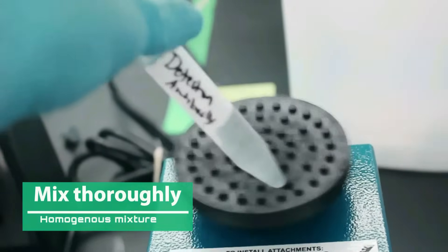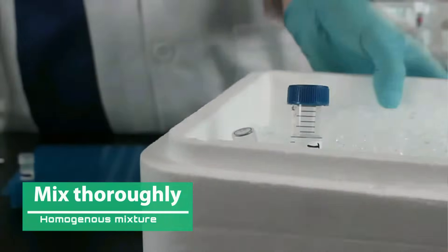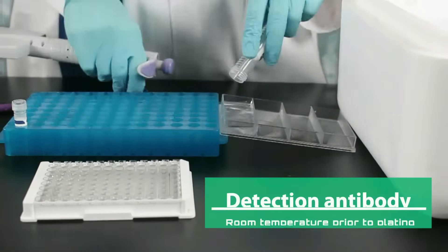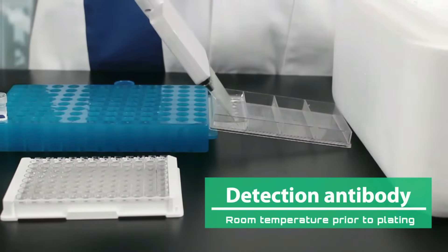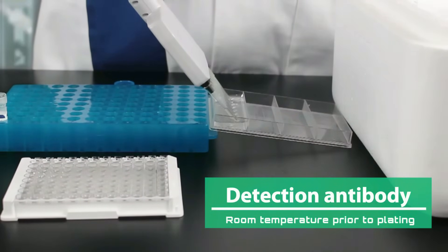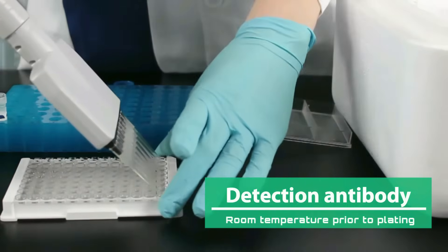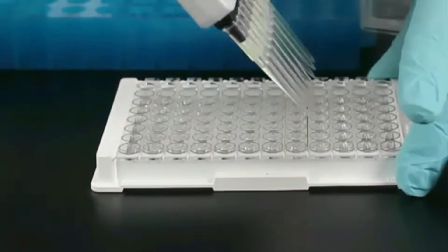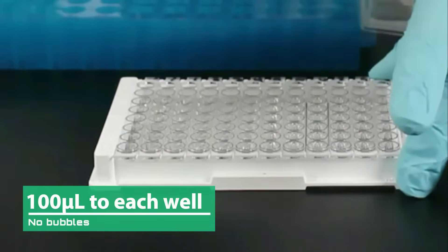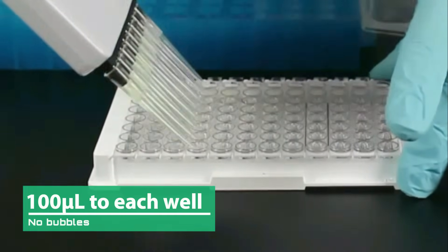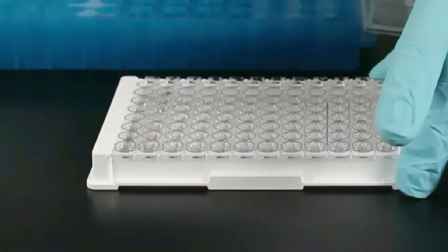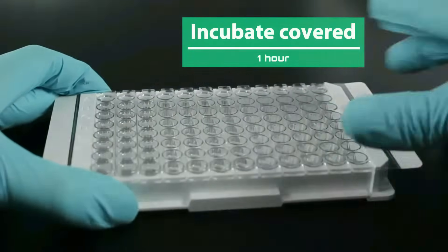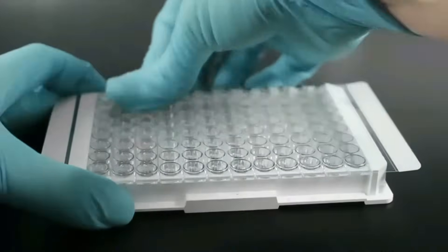Make sure the detection antibody is a homogeneous mixture by using a vortex. The detection antibody should be the same temperature as the plate prior to plating. Add 100 microliters to each well and make sure there are no bubbles. Cover and incubate for one hour. The biotinylated detection antibody will find that bound antigen with high specificity.